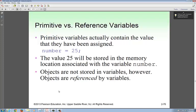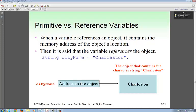Primitive variables actually contain a value being assigned, such as 25. So objects are not stored in variables. However, objects are referenced by a variable. We'll talk a little more about what this means as time comes. So all you're doing is you're saying that here's Charleston is putting in string name. This is what's called a reference address. So when a variable references an object, it contains the memory address of the location. So this variable city name right here, it has the address of Charleston. That's all it's doing.